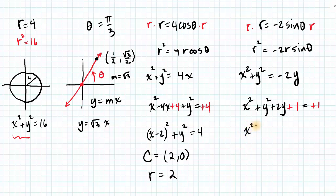Over here we complete the square in the y, we get y plus 1 quantity squared. So here we have a circle with center 0, negative 1, and a radius of 1.